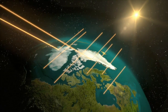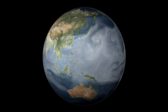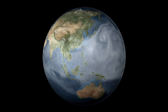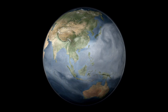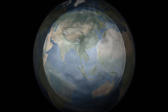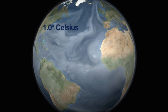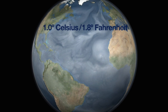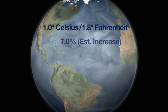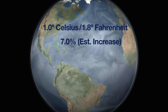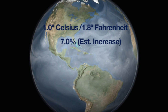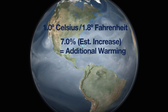Another important feedback involves water vapor. The amount of water vapor in the atmosphere increases as the ocean surface and the lower atmosphere warm up. Warming of 1 degree Celsius, or 1.8 degrees Fahrenheit, increases water vapor by about 7%. Because water vapor is also a greenhouse gas, this increase causes additional warming.